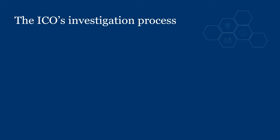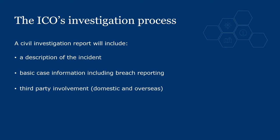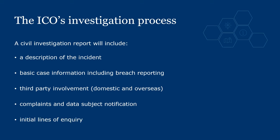Our civil investigations generally stem from a self-reported personal data breach or a complaint made to the ICO. To conduct an investigation, case officers review all available information and then send enquiries to the controller to fill any gaps. The enquiries usually focus on what happened, why it happened, and the controller's policies, procedures and training. A civil investigation report will include a description of the incident, basic case information including breach reporting, third party involvement, complaints, data subject notification, and initial lines of enquiry. This information will be used to decide if regulatory action is necessary.